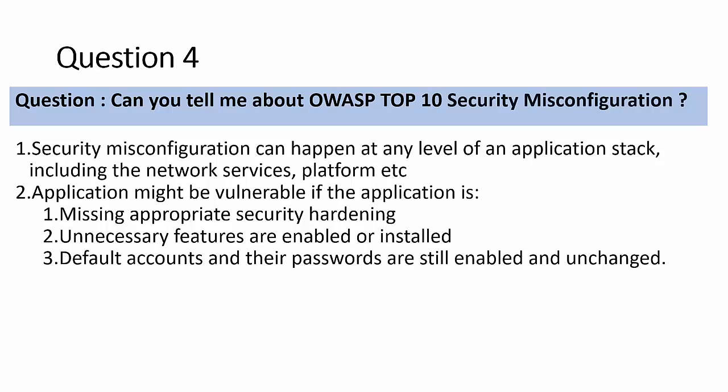Security misconfiguration can happen at any level — application level, network level, or platform level. Sometimes when browsing a website you can see complete OS and application details, not because of an application issue but due to an OS misconfiguration. Security misconfiguration means you have security in place but it's not configured properly. For example, a firewall where the 'deny by default' rule has not been enabled — all traffic passes through.